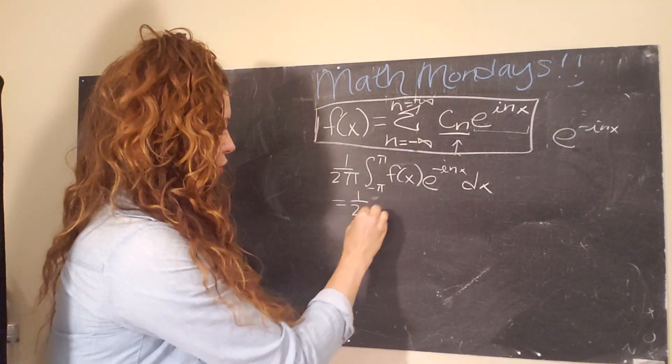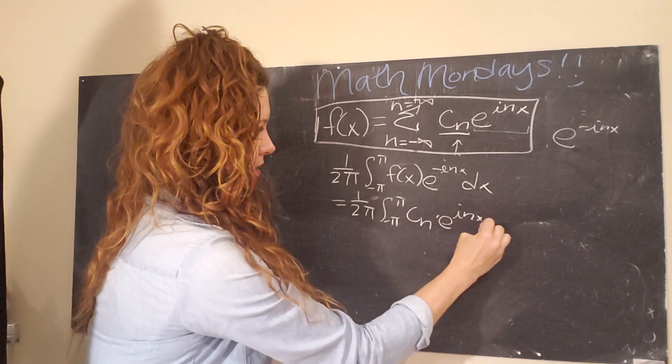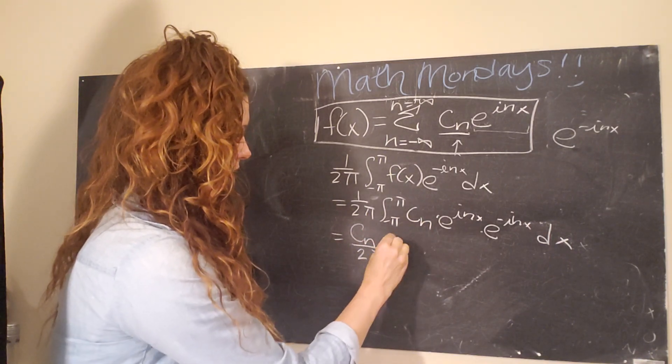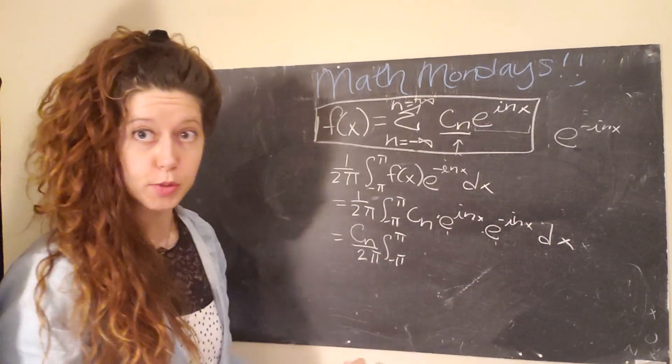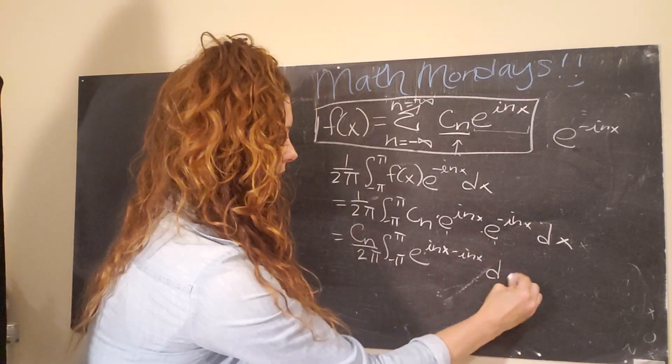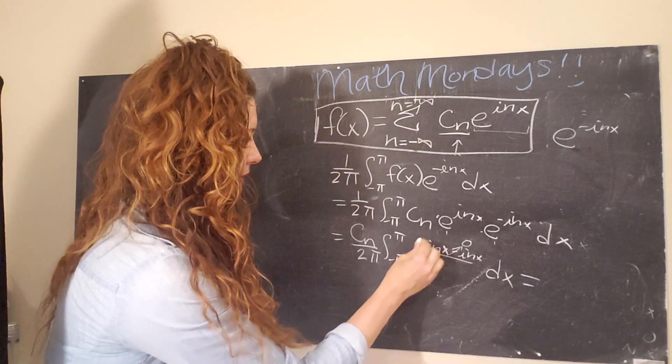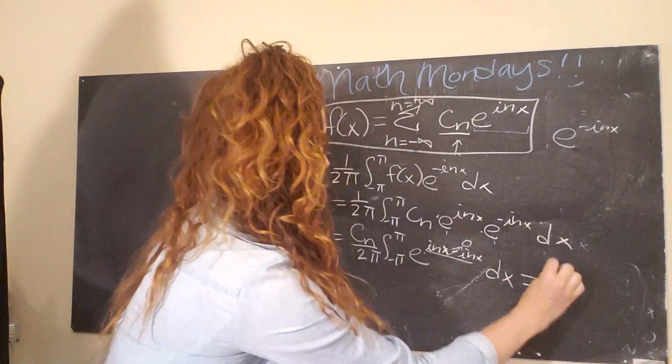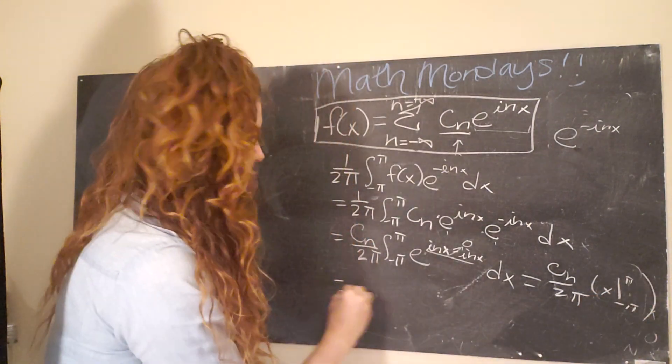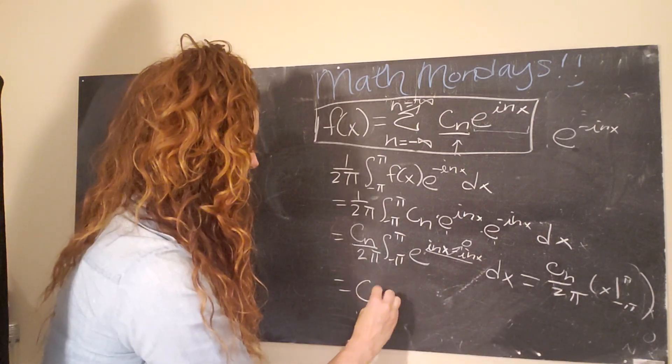So one over 2 pi, negative pi to pi cn times e to the inx times e to the negative inx dx equals, we can pull our coefficient out, so cn over 2 pi, negative pi to pi. Since the e's are multiplied together, that means we can add the exponents. So that's going to give us e to the inx minus inx dx. Wait a second, this just equals zero. Oh, that's handy. So then we have e to the zero, which goes to one. And so now we have cn over 2 pi. We only have a one in our integral, so we get, again, x from negative pi to pi. And since we already showed that pi minus negative pi is going to give us 2 pi, the 2 pi over 2 pi goes to one, so we just have that.